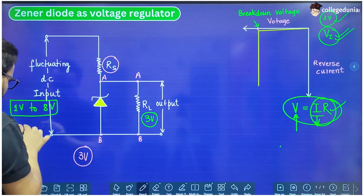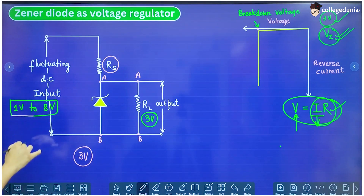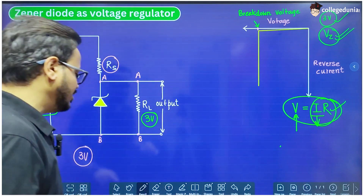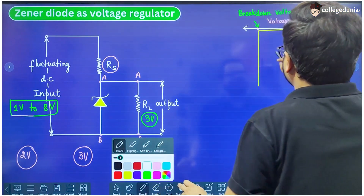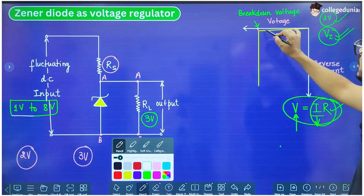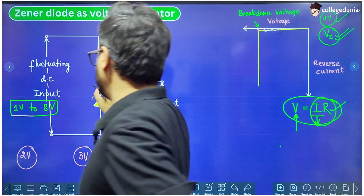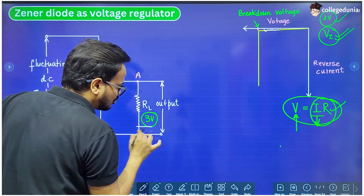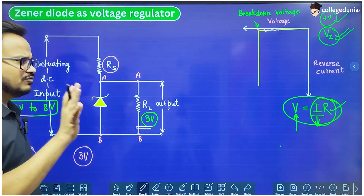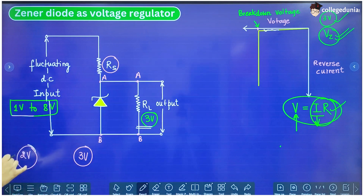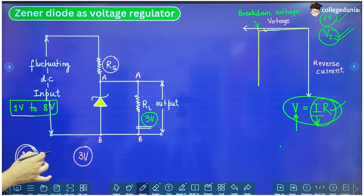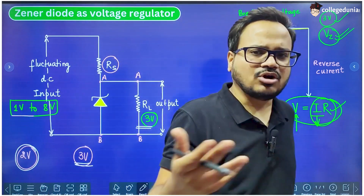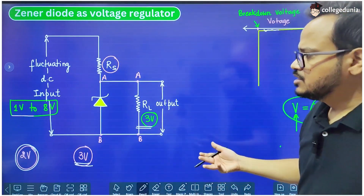Let's divide this working into two parts. If this input is less than 3 volt — let's say it is 2 volt — we can clearly see that if the voltage is less than the breakdown voltage, the current through the Zener diode is very small. So very small current will pass through the Zener diode and maximum current will pass through the LED, which will glow without any problem because the voltage will be less than 3 volts and that is not going to damage the LED.